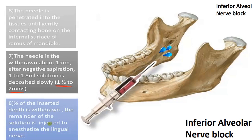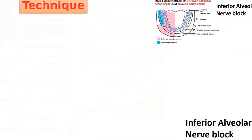The remainder of the solution is then injected. This procedure also anesthetizes the lingual nerve, since the lingual nerve is very close to the mandibular nerve. The nerves anesthetized during this procedure include the lingual nerve and the inferior alveolar nerve.